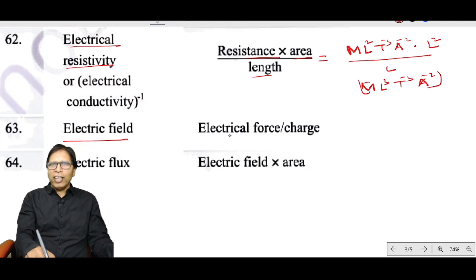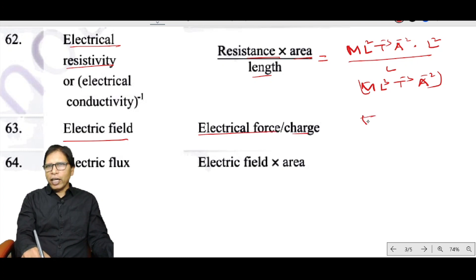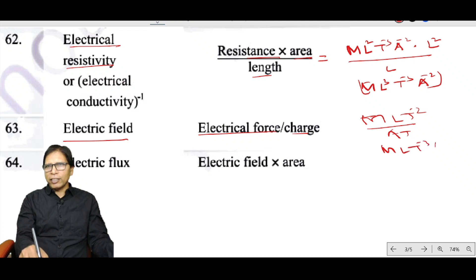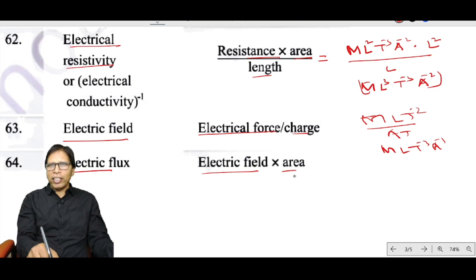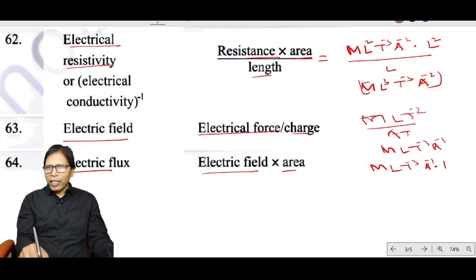Electric field equals force divided by charge: MLT⁻² ÷ AT = MLT⁻³A⁻¹. Electric flux equals electric field × area: MLT⁻³A⁻¹ × L² = ML³T⁻³A⁻¹.